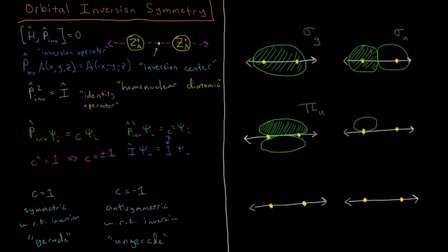If two p orbitals overlap destructively, we get a situation with plus, minus on one side and minus, plus on the other. Now checking inversion: positive to positive, zero to zero, negative to negative — I'm keeping the same sign each time. So this is a pi g orbital — a gerade antibonding orbital. The antibonding pi orbital is gerade.